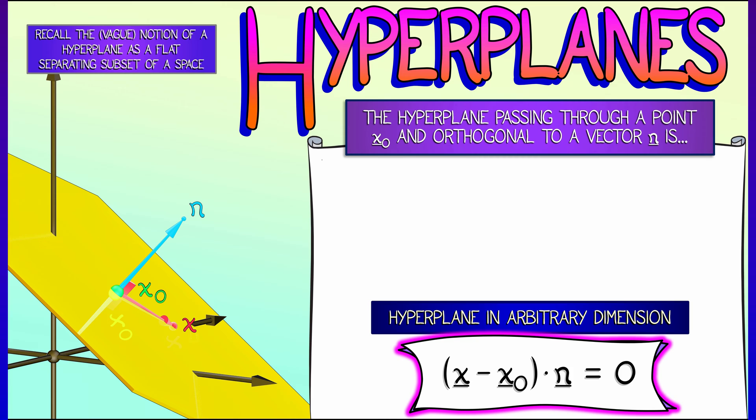Here is the implicit equation. Take a point x on the hyperplane, look at the vector x minus x-naught, take the dot product of that with n and set it equal to zero. That is the implicit equation for the hyperplane.